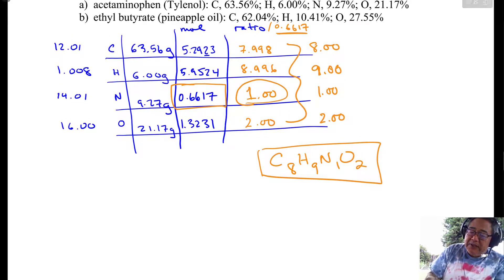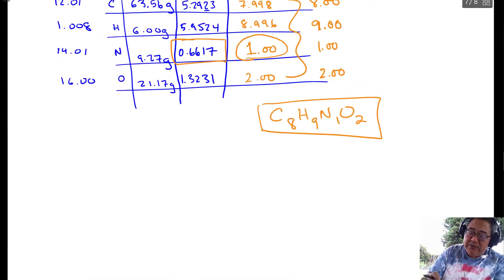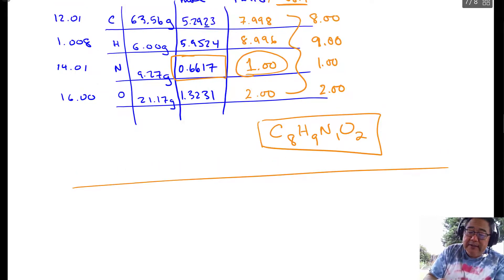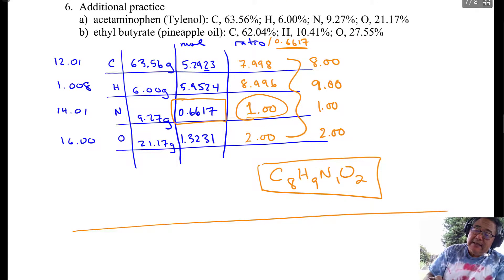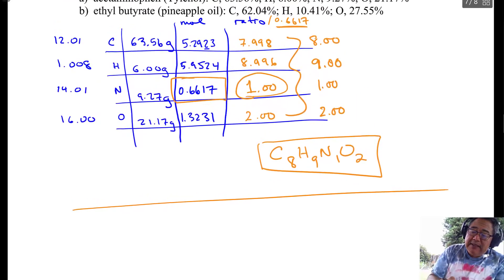So we'll do the one for ethyl butyrate. We'll do ethyl butyrate. I'll get back to my blue pen. All right, C is 62.04. And H is 10.47. And O is 27.55. So this is what I want you to do. You're going to set up the table and put everything in place like you're getting ready to do the calculation. And then calculate the moles, and then we'll stop and we'll chat and we'll see how it goes. Okay, see where you get to.